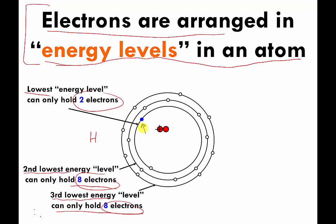Imagine I had a helium atom — helium has two protons. If I was going to make a neutral helium atom, I would need two electrons. Is there a place for the second electron in the first energy level? Yes there is — there's the empty slot. So we would add another electron, and it would definitely be located in the first energy level. Now I've got a helium atom that is electrically neutral because it has two negative charges and two positive charges.